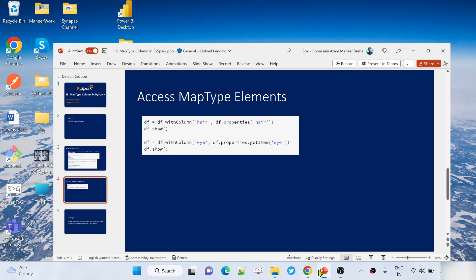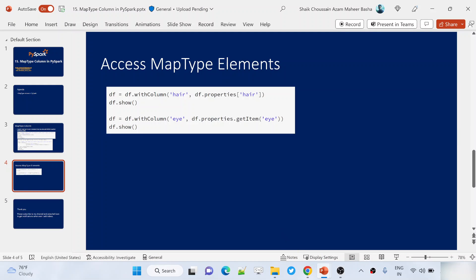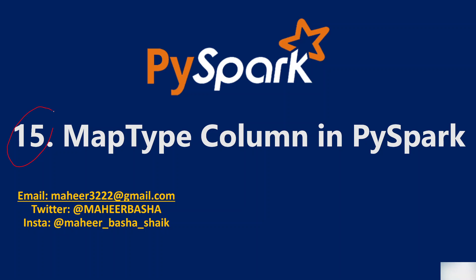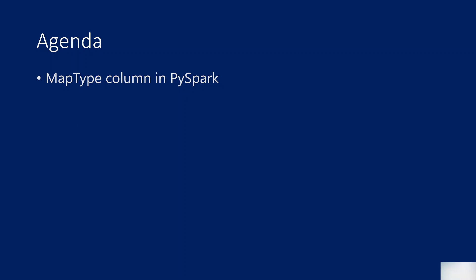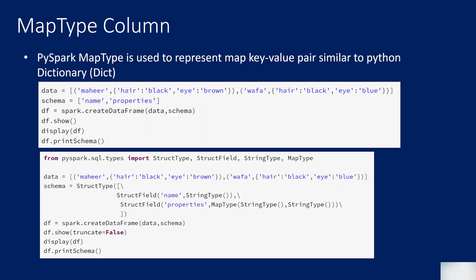Hello friends, welcome to a First Edition YouTube channel. This is part 15 in the PySpark playlist. In this video we are going to discuss map type columns in PySpark, and also how to retrieve items from map type columns. Please watch my previous videos where I explained data frames, structure type, structure field, and array type columns. This video is a continuation of those.